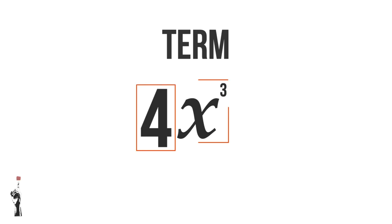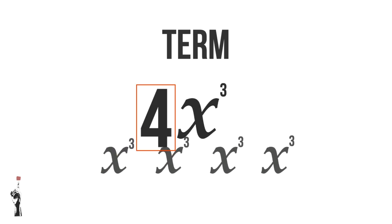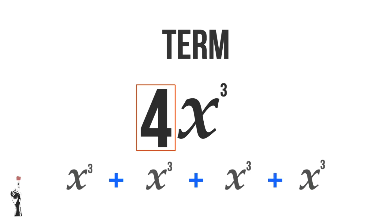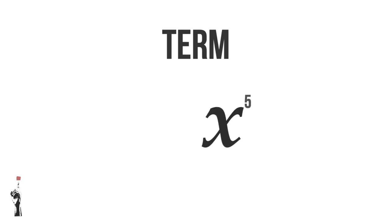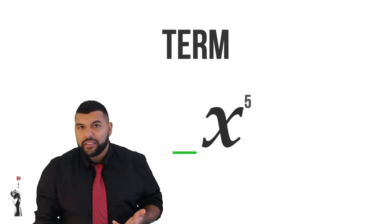So what does the 4 mean? The 4 means that we have X cubed plus X cubed plus X cubed plus X cubed. So essentially, 4X cubed means it's 4 multiplied by X cubed. We notice that if we have X to the power of 5, there's no number in front of it.